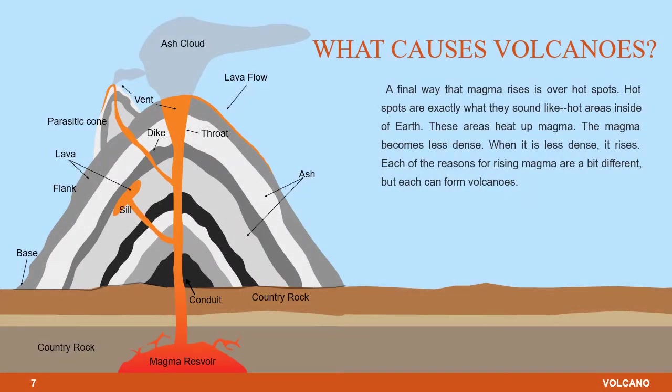A final way that magma rises is over hot spots. Hot spots are exactly what they sound like — hot areas inside of Earth. These areas heat up magma. The magma becomes less dense, and when it is less dense, it rises. Each of the reasons for rising magma are a bit different, but each can form volcanoes.